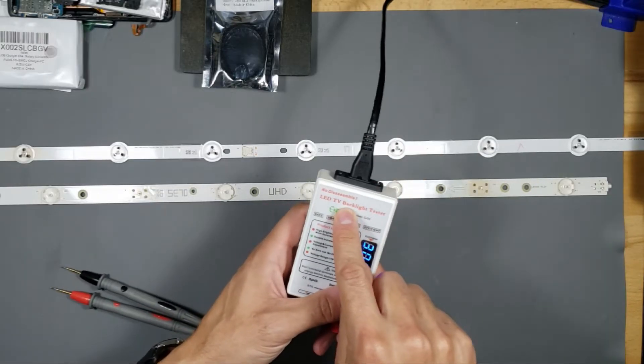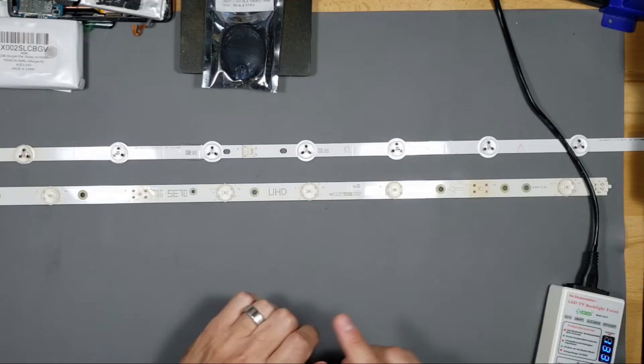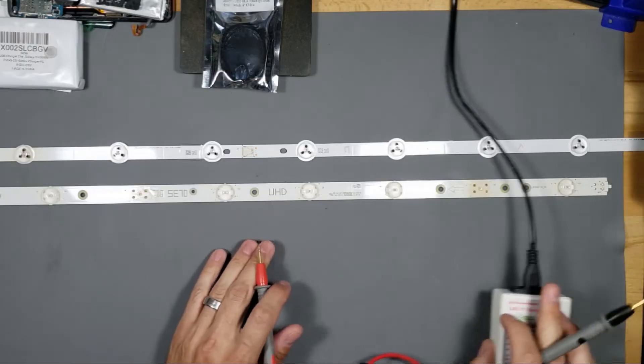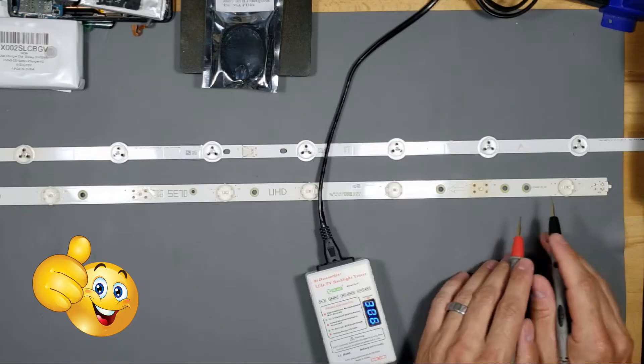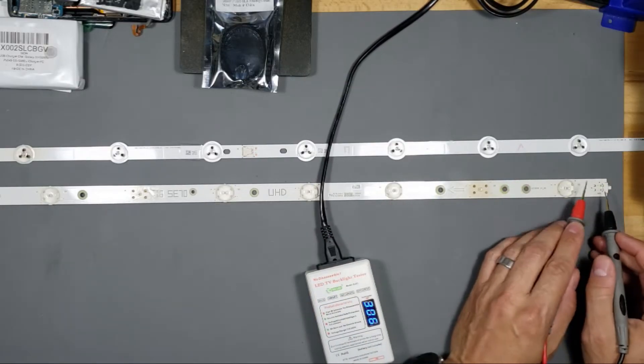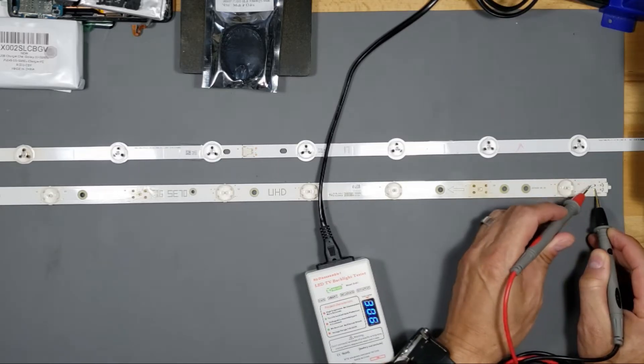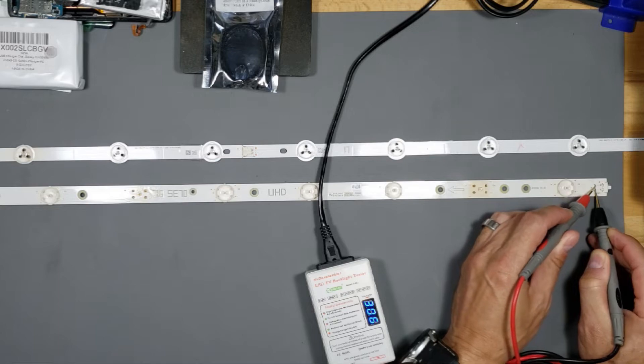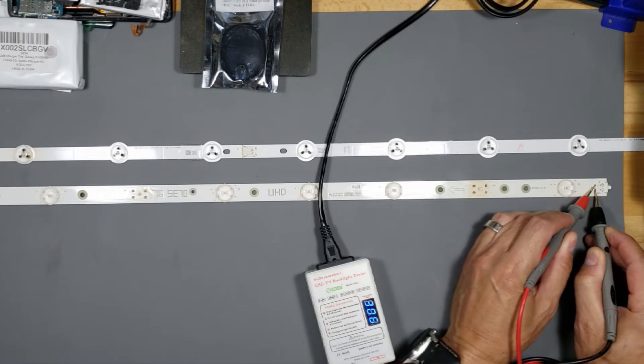So we're going to use this backlight tester and test these. There's a couple ways to test them. You could test it using the test points on the LED strip. You unplug it from the circuit and then you put your black probe on the negative test point and your red positive probe on the positive test point.